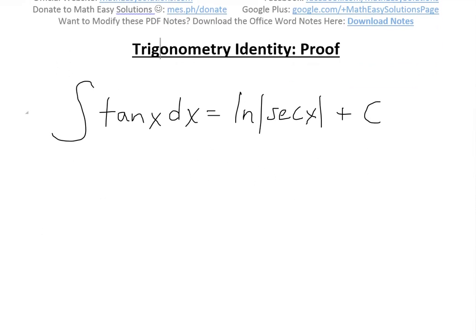So the first thing to do in solving or proving this identity is to simplify or expand this tan of x, write it using the definition. So we can write it as the integral of tan x equals the integral of sine of x divided by cos of x. It's just the basic definition of tan of x.